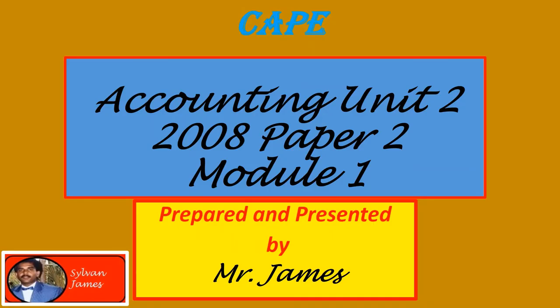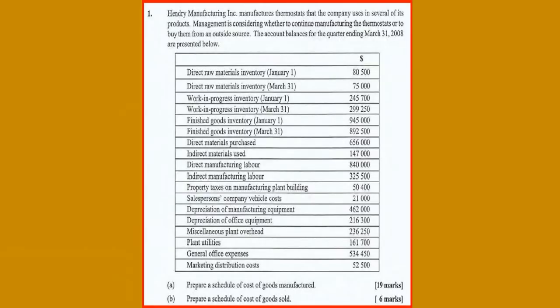Hi and welcome to another Mr. James accounting tutorial. Today's topic will be looking at accounting unit 2, paper 2, 2008. We are given some data here for Henry Manufacturing Incorporated. It lists the balances from his books and we are asked to prepare a schedule of cost of goods manufactured and a schedule of cost of goods sold.